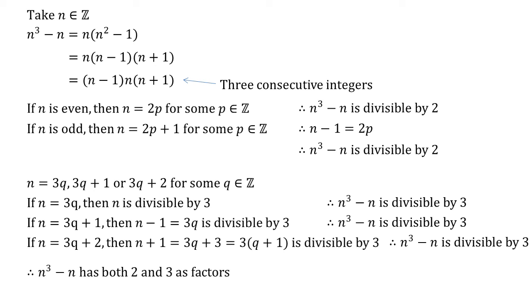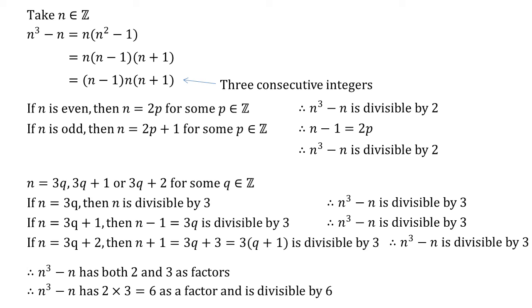So we've shown that n cubed minus n has both 2 and 3 as factors, but if it has both of those then it must have 2 times 3 equals 6 as a factor, hence it's divisible by 6. We've solved the problem. If you've enjoyed this video, don't forget to subscribe to the Doing Maths channel or check out some more of my videos by clicking on the links here.